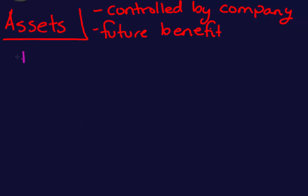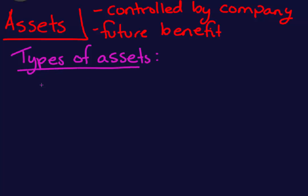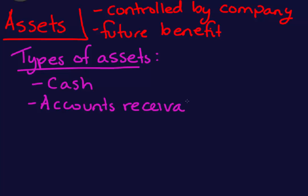Let's look at some accounts that are types of assets and how they benefit the company in the future. The first most obvious asset is cash — we can spend it to maintain operations or buy a building. The next is accounts receivable, which is amounts that people owe you for work you've done for them. Hopefully your customers will eventually pay you, turning those into cash which you can then spend.